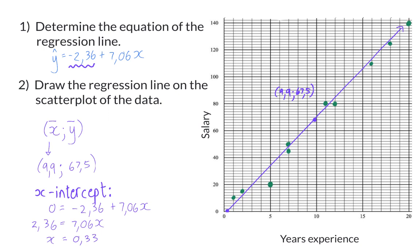Depending on how strong the correlation between the two sets of data is, this line can be used to make predictions.